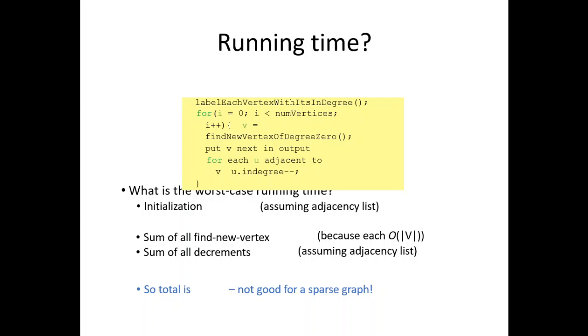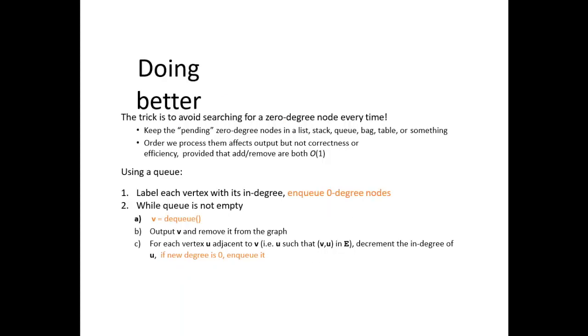You can see from the pseudocode, we have initialized i to 0 to check if i is less than the number of vertices and increment it, then the vertices become the new in-degree 0. Of course, the worst case time running time would be the initialization of sum adjacency list, but some for finding vertices and decrements.